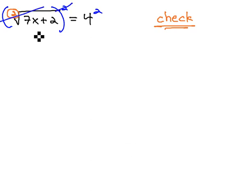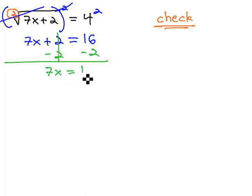Second power and second root are inverses, leaving just 7x plus 2 equals 4 squared, which is 16. Subtract 2 from both sides. Solving the remaining two-step equation gives us 7x equals 14.